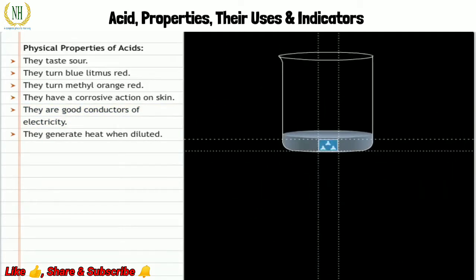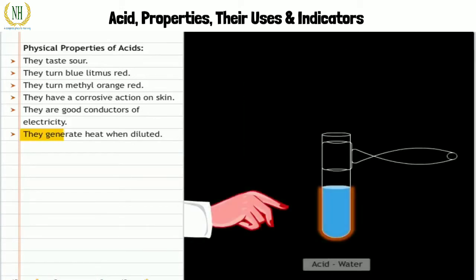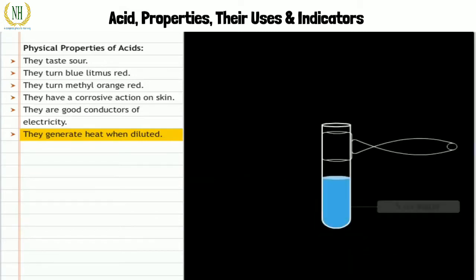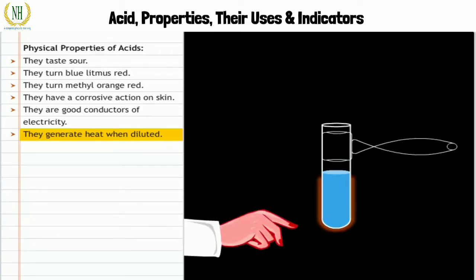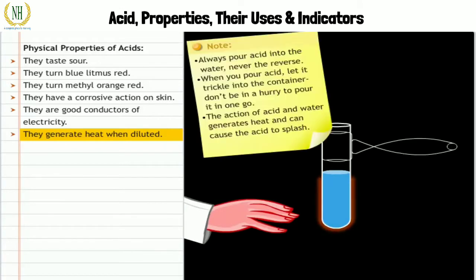Mixing an acid with water reduces the concentration of hydronium ions of the acid per unit volume. This is called dilution of acid. Acids generate heat when they are diluted. This is because the action of acids with water is exothermic. Take 5 ml of water in a test tube and carefully add sulfuric acid to it. Now shake the test tube and touch its base. The base will feel hot, indicating that the reaction between acid and water is exothermic.